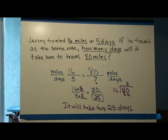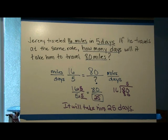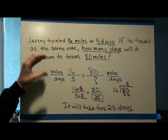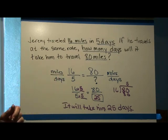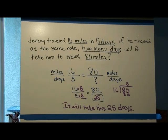On your worksheet, you have another example all written out for you, and you can also click on an optional video if you want to watch that example worked out. Then you have 8 problems to try. Make sure that you have a good setup on your paper that shows the proportion, the work, and a complete answer. If you have any questions, ask an instructor or the tutors for help. When you're all done, turn your paper in.